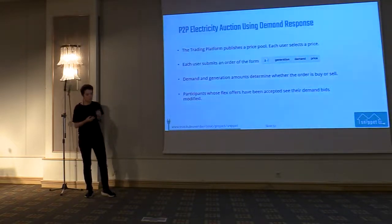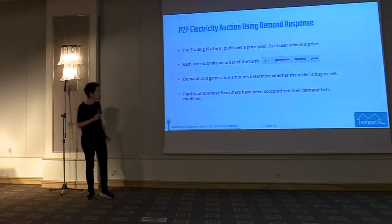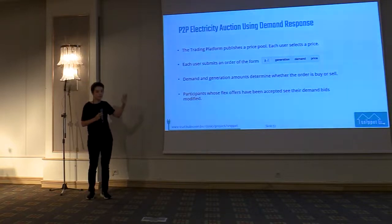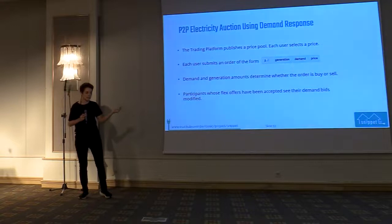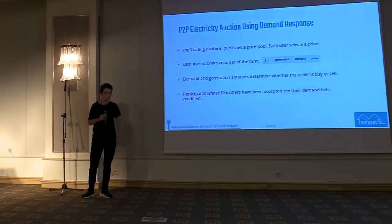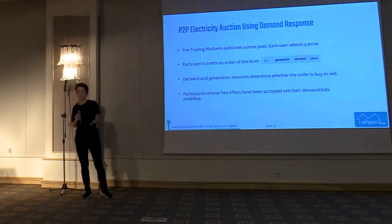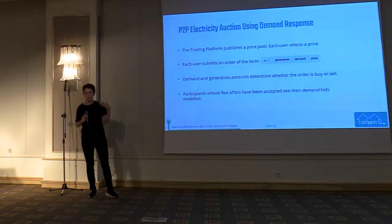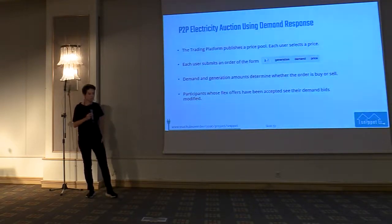To build a peer-to-peer electricity market, the trading platform will publish both a set of prices for flexibility and a set of prices for electricity markets. Users submit bids not only for flexibility but also for electricity — stating their demand and generation for each time slot — which becomes a bid for buying or selling depending on whether there's more demand or generation. According to the flexibility allocated for each time slot, we change the electricity bids. For example, if your washing machine started running earlier than originally planned, your demand for that time slot changes. We then perform a double auction to determine who will trade electricity in this market.